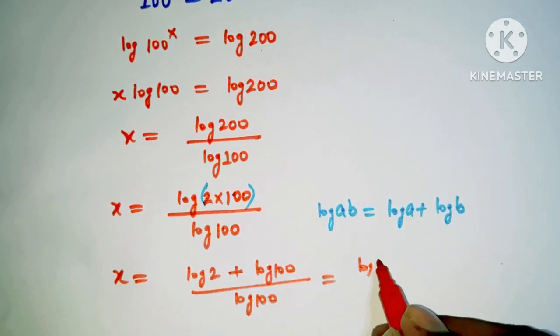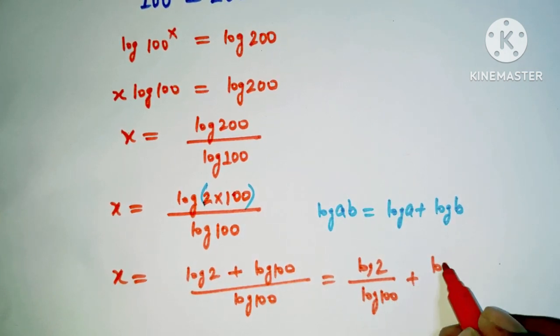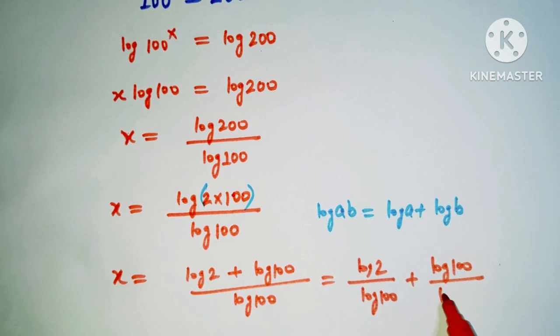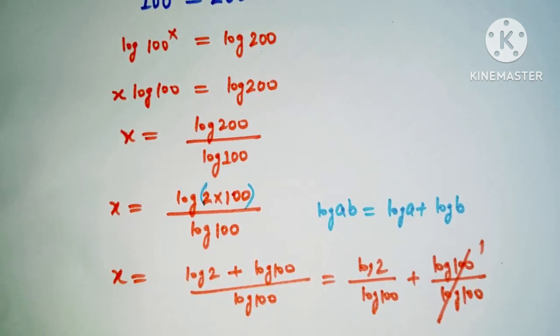That can be written as log 2 divided by log 100 plus log 100 over log 100. This will cancel and we have 1 here.